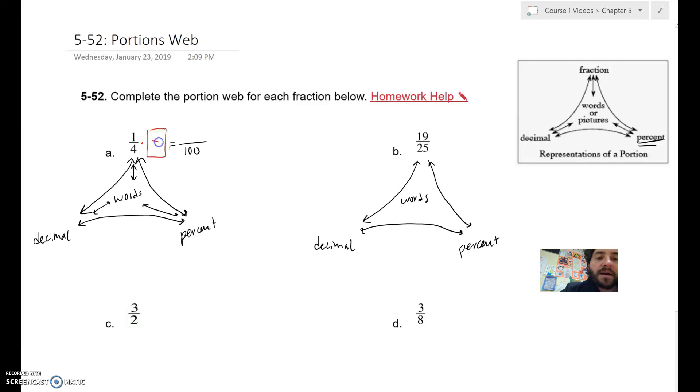And in this case, I can. I know that four quarters make a dollar, so 4 times 25 is 100. If I multiply the denominator by 25, I need to multiply the numerator by 25 to keep them equivalent fractions.